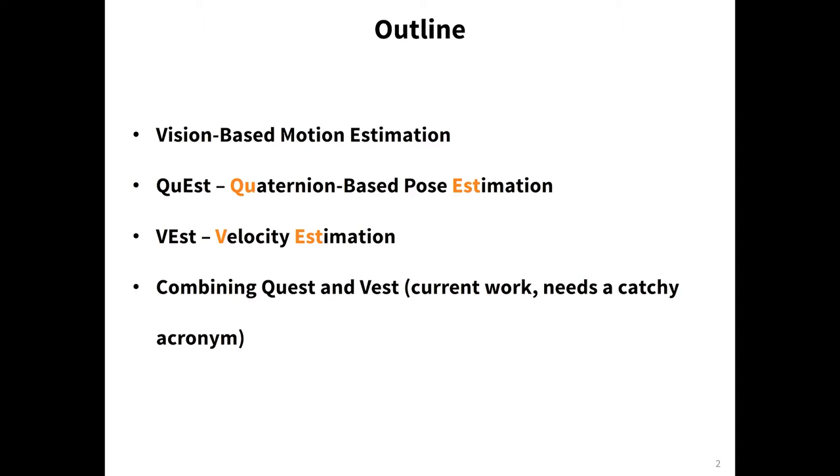We'll be going over a general outline of what vision-based motion estimation is and what we mean by that, then our two main algorithms. One is the quaternion-based pose estimation, the other velocity estimation, and then our current efforts which is to combine these two. But I don't have a catchy acronym like QuEst and VEst, so I need to come up with something there.